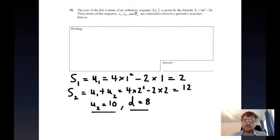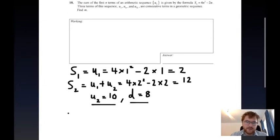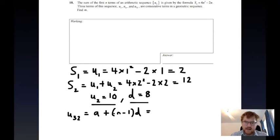We also need to work out the 32nd term, so to work out u32 we're going to use our formula of a plus n minus 1d, which is on our formula sheets for both courses. The first term is 2, n is 32 because it's this number here, so we get 31, and our common difference is 8. If we work that out we should get 250.